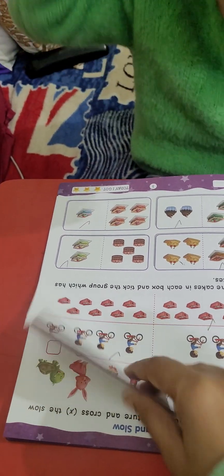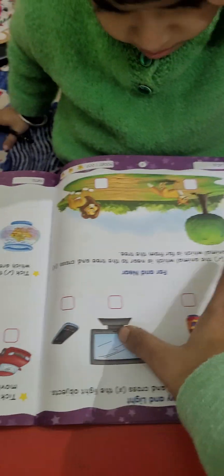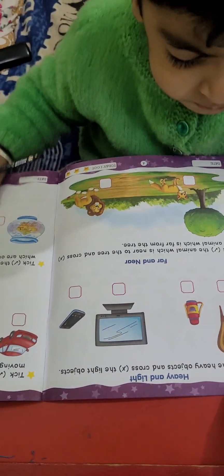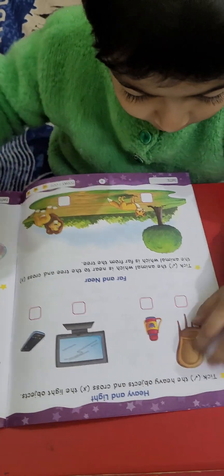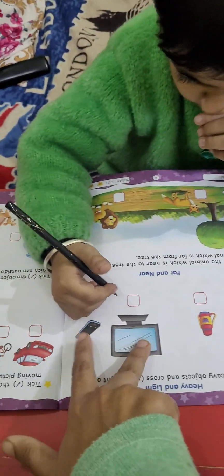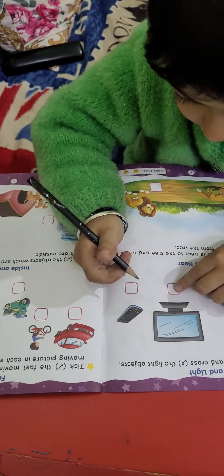Let's move on the next page. Now, can you see here, which is the heavy object? This one or this one? This one. Very nice. Tick. Now, check in this. Which will be heavy? This. Okay. Good.